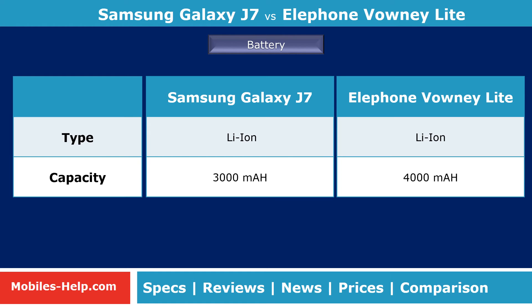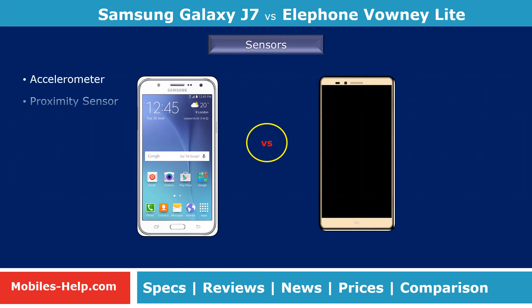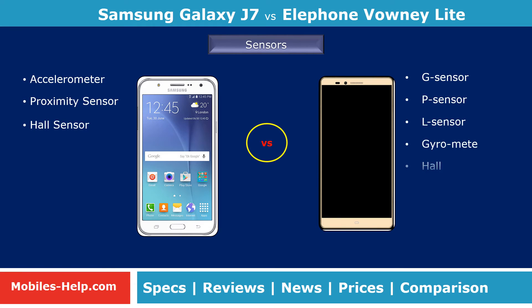Sensors on the Galaxy J7 include accelerometer, proximity, and hall sensor. Bounty Lite sensors include G-sensor, P-sensor, L-sensor, gyroscope, hall sensor, barometer, e-compass, and fingerprint sensor.